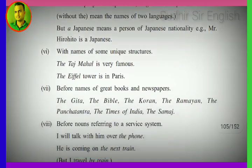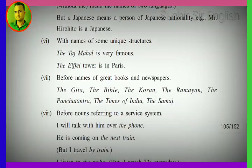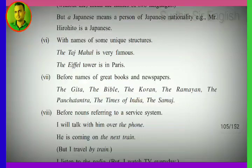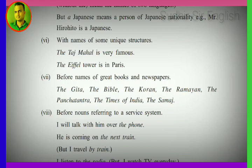Next: with names of some unique structures — things that are one of a kind — we use 'the'. Examples: 'The Taj Mahal is very famous.' 'The Eiffel Tower is in Paris.' The Taj Mahal and the Eiffel Tower are unique structures, so we use the definite article before them.